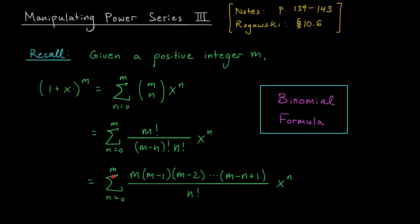Now check this out. This expression looks a lot like a Maclaurin series, right? We have powers of x together with some coefficients. Well, this is a Maclaurin series — it's the Maclaurin series for the function 1 plus x to the m. Now, we've carried out this analysis assuming that m is a positive integer. But it makes sense to ask for the Maclaurin series for this function even when m is not an integer.